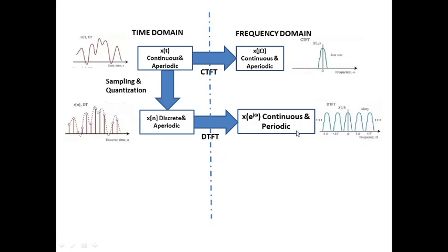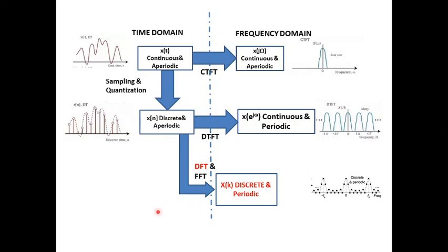Why do we have to go for DFT? On the same discrete time signal, if you perform another transform called Discrete Fourier Transform, you get a spectrum X(k). Observe the nature of X(k) — it is discrete and periodic. So both DTFT and DFT are frequency or spectrum representations of your discrete time signal. Then why do we need DFT? Why wouldn't we stop with DTFT?